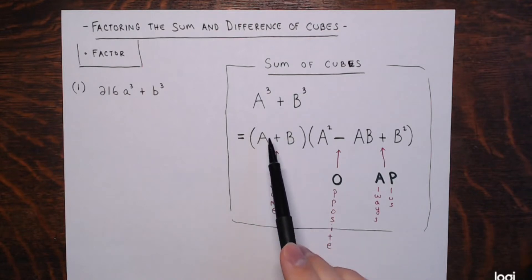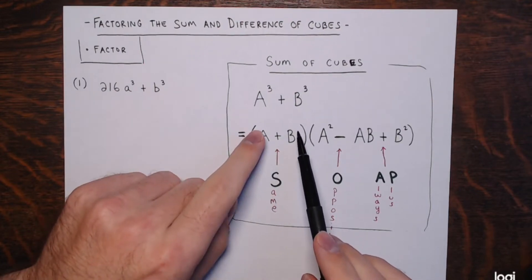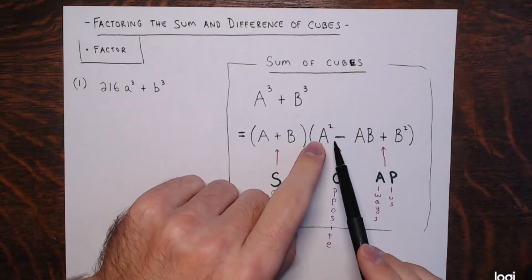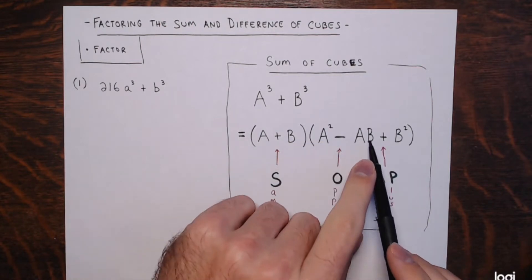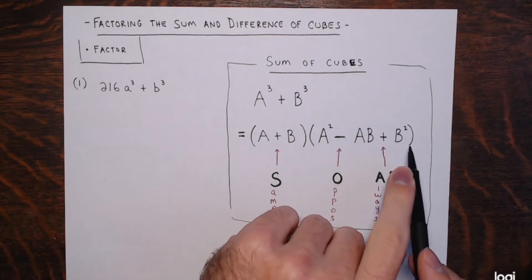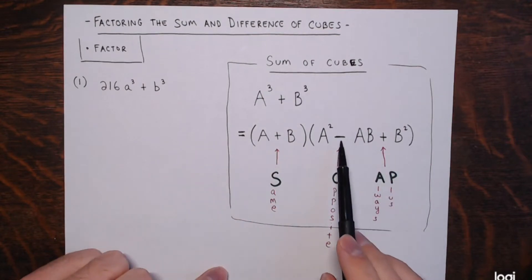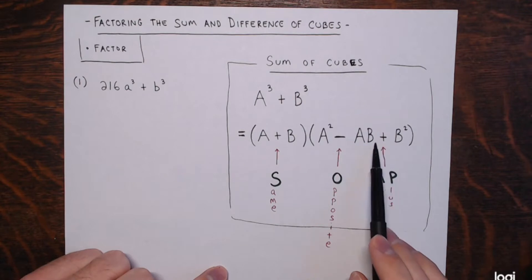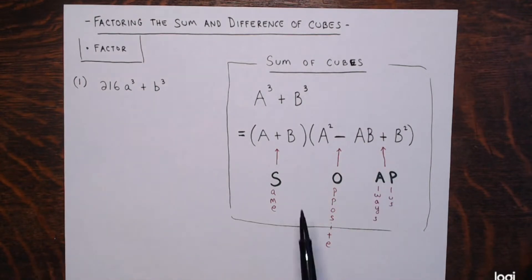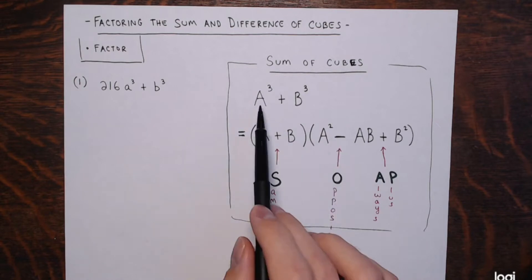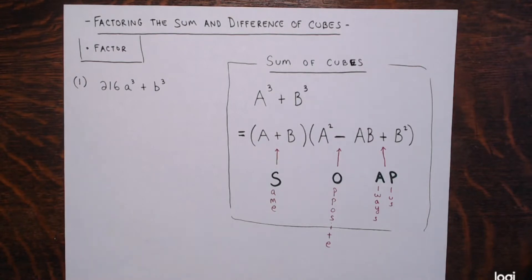So a cubed plus b cubed factors to a plus b — just get rid of the cubes, keep the same sign — times a squared minus ab plus b squared. The power of a decreases as you move left to right, the power of b increases. The sign between a squared and ab is opposite, so if you have a sum of cubes it's a minus. The sign between ab and b squared is always plus. You can check by multiplying out, distributing the a and the b and combining like terms, and you'll see it equals a cubed plus b cubed.